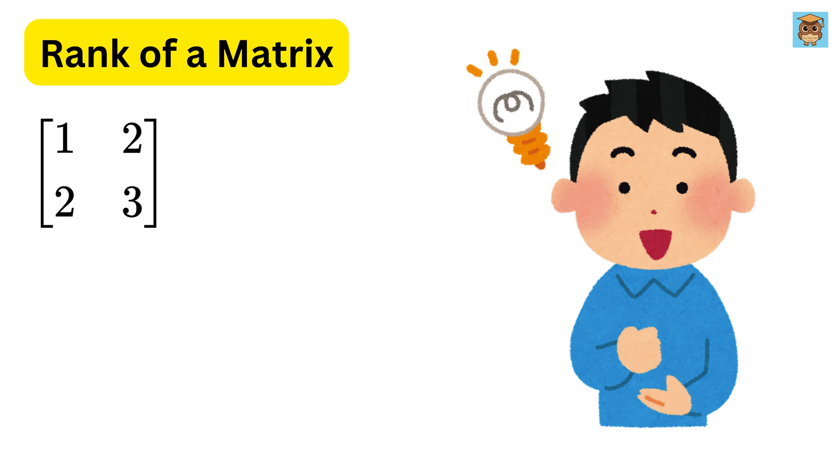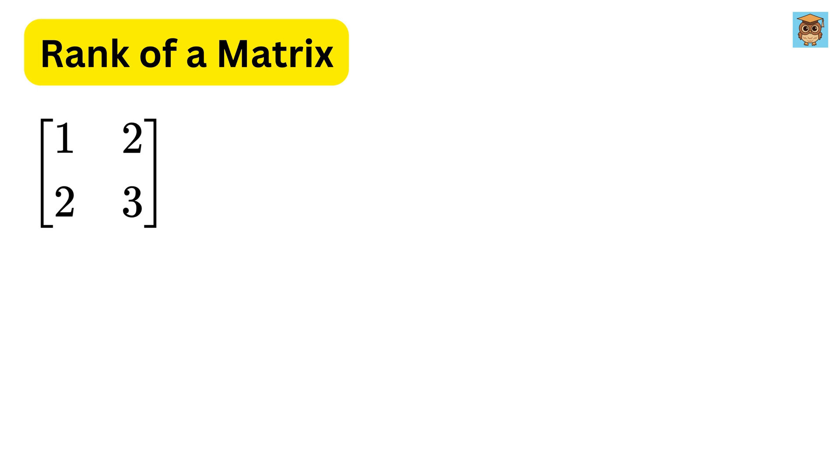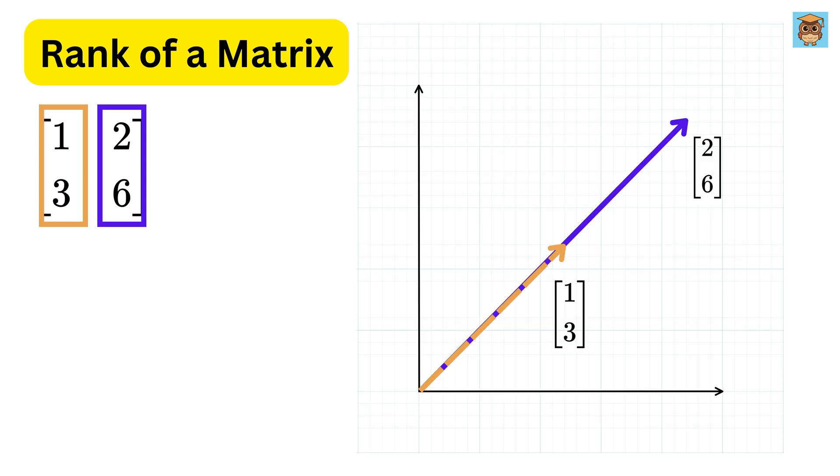If the column space concept is clear, then understanding the rank of a matrix will be a piece of cake for you. Rank is simply the number of linearly independent columns in the matrix, or in other words, how many directions in space the matrix can actually reach. In our first example, even though the matrix had two columns, they were pointing in the same direction. 1, 3, and the other column was just a multiple of the first column. That means the matrix could only reach points along a single line. So, the rank of this matrix is 1.